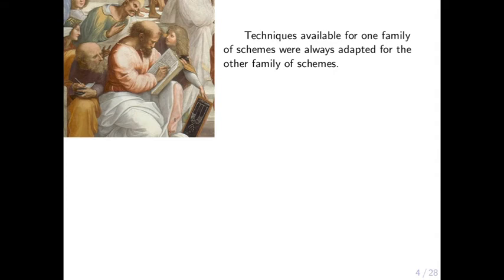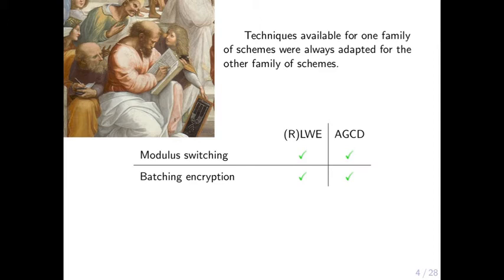We have these two families of homomorphic schemes, and every time a technique was proposed to improve schemes based on one of these two problems, it was quickly adapted to the other. For instance, we have modular switching for schemes based on both the LWE and AGCD problems. We also have batching encryption and schemes with quasi-additive noise growth based on both assumptions.